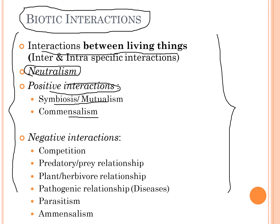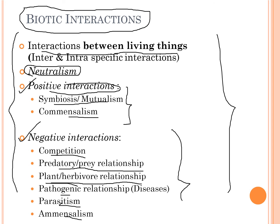Positive interactions include symbiosis or mutualism, where both organisms benefit equally, and commensalism, where one gets benefited while the other is neither harmed nor benefited. There are also negative interactions such as competition, predator-prey relationship, plant-herbivore relationship, pathogenic relationships, parasitism, and amensalism — these cause harm to one or more organisms.